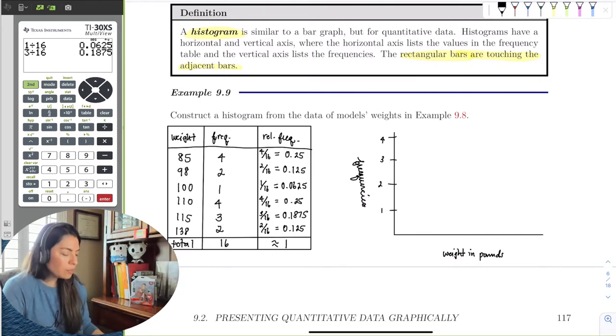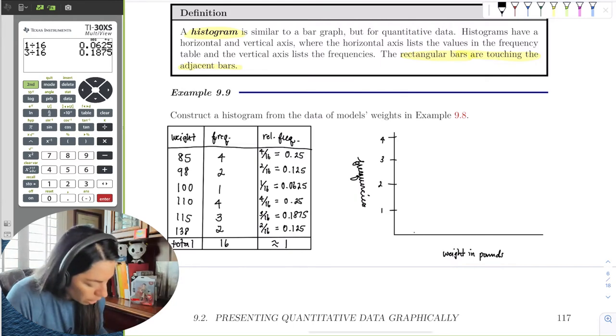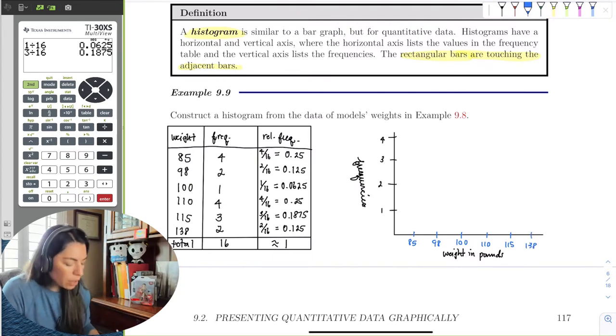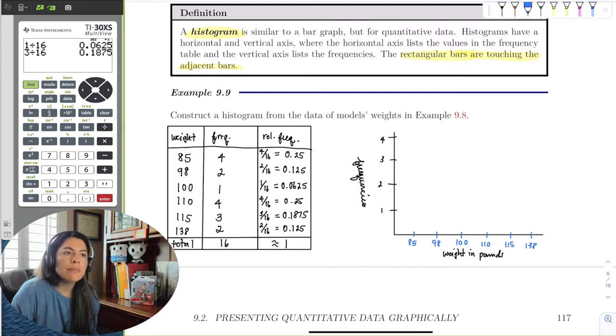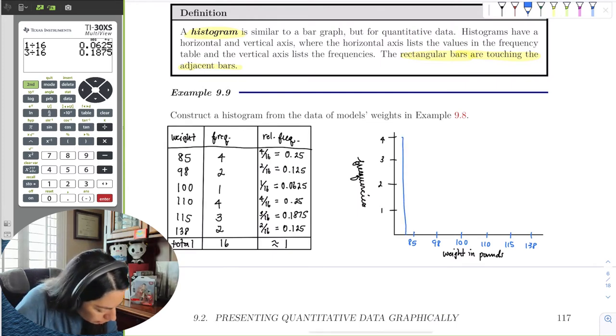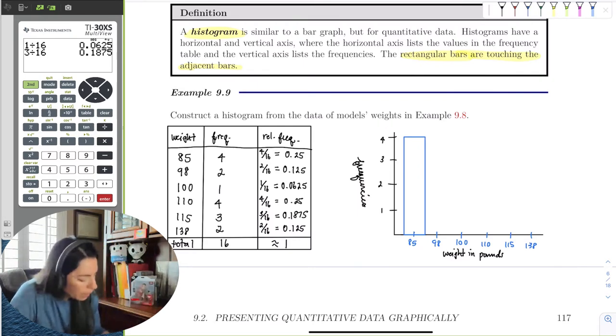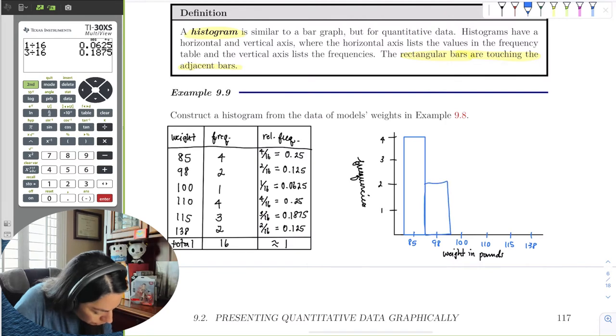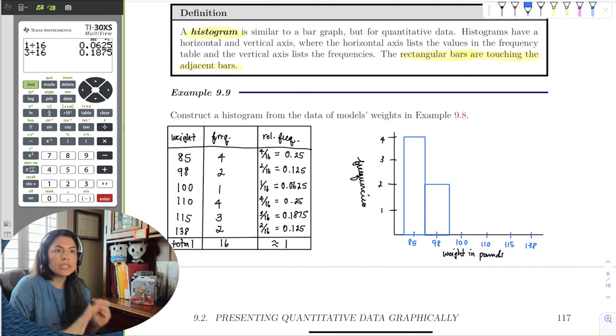Frequencies are the number of models that are in that weight category. So there are 4 models that are 85. So I would just do 4 tick marks. Here is 1, 2, 3, 4, and these are going to be the frequencies. The weight in pounds, because we're given just weights by themselves, it's going to be similar to the colors, where we're going to have 85 here. So 85, 98, 100, 110, 115, and 138. We're going to draw the bars touching and according to the height of the frequency. So for the first one, the frequency is 4 for models that weigh 85 pounds. So it'll look like this.